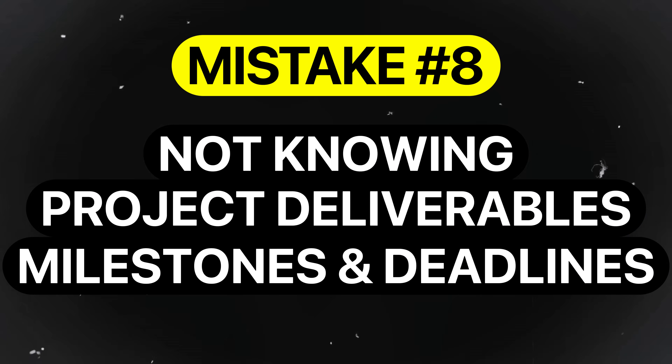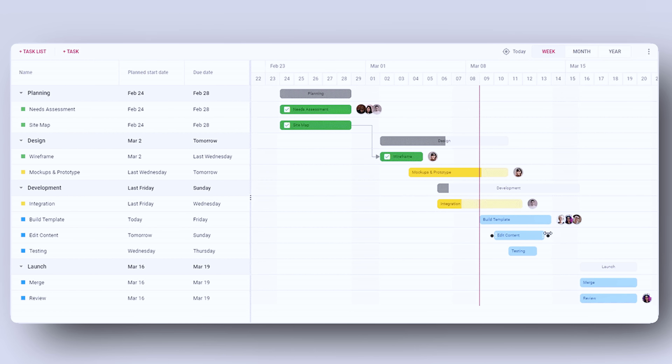Mistake number eight is not knowing project deliverables, milestones, and deadlines. Engineers unaware of program gates and launch schedules prioritize tasks based on personal preferences rather than project needs. For example, an engineer oblivious to project deadlines might spend two weeks refining cosmetic covers while the functional PCB assembly mounting features remain incomplete, jeopardizing the engineering validation test build deadlines. Always align your daily work with critical path items and program milestones to ensure timely project execution.